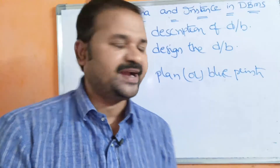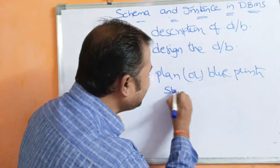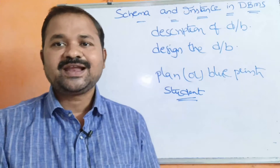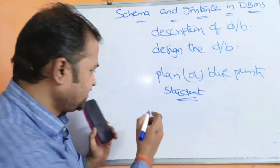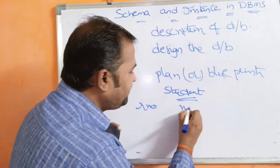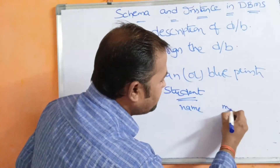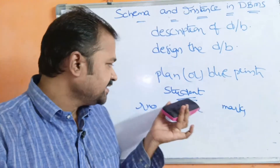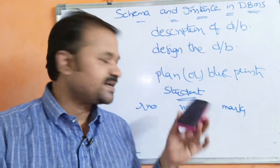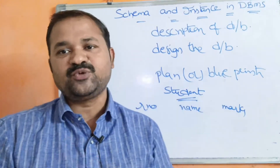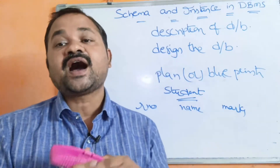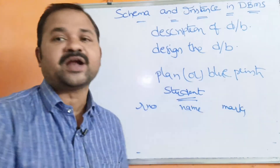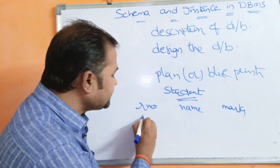It is useful in designing the database. Let us take the example of a student relation or student table. Let the student table contain three fields: the first field is roll number, the second field is name, and the third field is marks. So here schema mainly specifies the relation name, which is nothing but the table name. Here the table name is student, and it specifies the column names or field names — roll number, name, and marks.